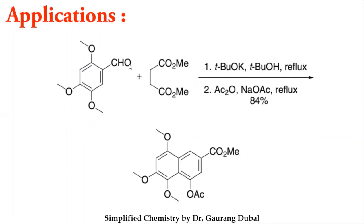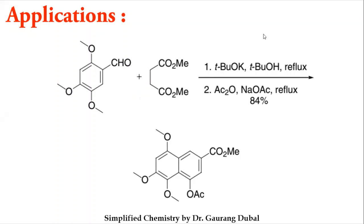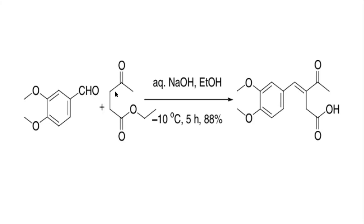For applications: in the first application, an aldehyde is taken as the carbonyl compound — you can draw it with one H and the aromatic part. This aldehyde reacts with diethyl succinate and the product gets cyclized. In the second application, a derivative of diethyl succinate is used; it reacts with a carbonyl compound to give a double bond and an acid product.